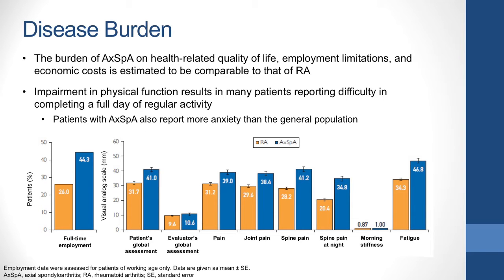A study comparing disease burden in patients with rheumatoid arthritis and axial SPA demonstrated that the burden of axial SPA—with respect to reduced health-related quality of life, employment limitations, and economic costs—is roughly comparable to that of rheumatoid arthritis. Impairment in physical function, particularly movements associated with bending at the waist, causes many patients difficulty completing a full day of regular activity. Importantly, most impairment of physical function occurs within the first 10 years of disease onset and is associated with reduced vitality and fatigue.